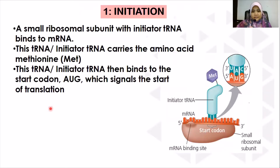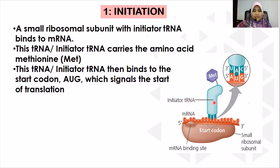In initiation, the stage begins when the small ribosome subunit and initiator tRNA together bind on the mRNA. We call this tRNA the initiator tRNA because it is the beginning tRNA — the tRNA that starts the translation process. As you can see, the tRNA holds or binds the methionine amino acid, MET. As we know, MET is the amino acid coded by the start codon AUG. Thus, this tRNA that brings the methionine amino acid is called the initiator tRNA.